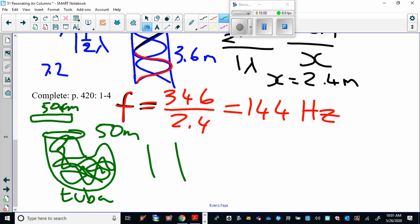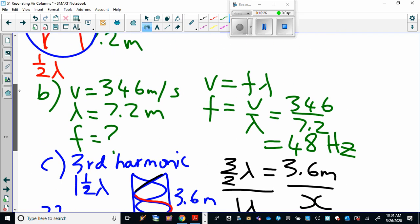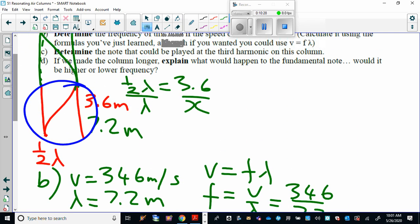So the longer column means you're going to have a bigger wavelength in there. So instead of 3.6, now you make it big. And you put your fundamental in that bigger column, let's say 6 meters long, then the wavelength is going to be much longer. So you have a bigger wavelength, therefore a much lower frequency. The answer to D is the fundamental note would have a lower frequency because it's going to have a much bigger wavelength.